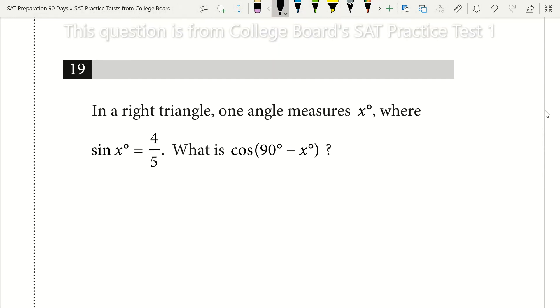Here's an SAT math trick you can use to save time. In a right triangle, one angle measures x, where sine of x equals 4 fifths. What is the cosine of 90 minus x?